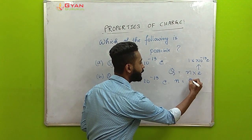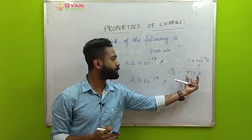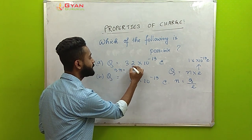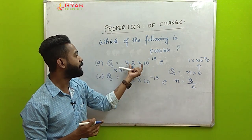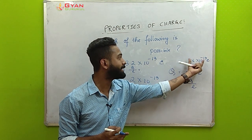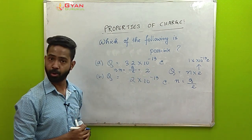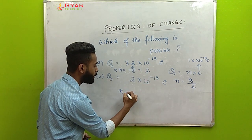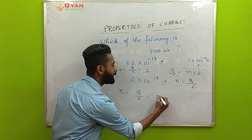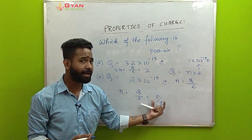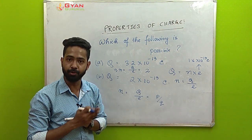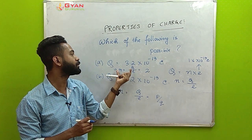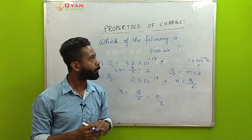For example: which charge value is possible — 3.2 × 10⁻¹⁹ C or 2 × 10⁻¹⁹ C? Using n = q/e: for 3.2 × 10⁻¹⁹ divided by 1.6 × 10⁻¹⁹ gives n = 2, a whole number — so this is possible. For 2 × 10⁻¹⁹ divided by 1.6 × 10⁻¹⁹ gives a fractional value of n, which is not possible. So 3.2 × 10⁻¹⁹ C is the valid case.